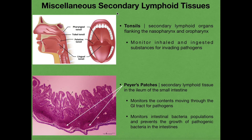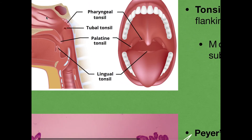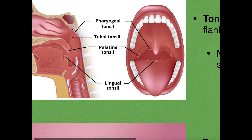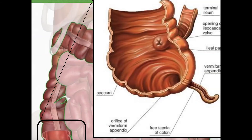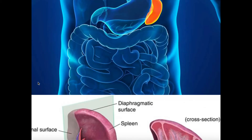In the last part of this video, we'll briefly discuss two secondary lymphoid tissues: tonsils and Peyer's patches. Tonsils are secondary lymphoid organs that flank the nasopharynx and oropharynx. We have the pharyngeal tonsil, a tubal tonsil that guards the opening of the pharyngeotympanic tube leading to the ear, a palatine tonsil, and a lingual tonsil. These are all secondary lymphoid organs. They house white blood cells — T cells and B cells — in the same way as the appendix, spleen, and lymph nodes.